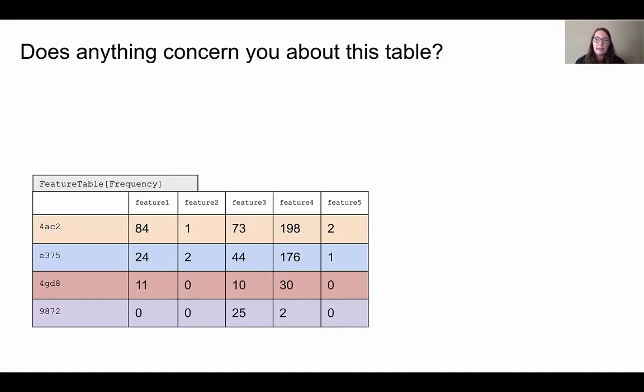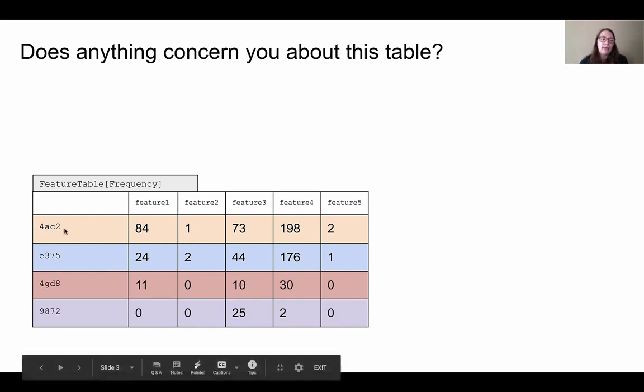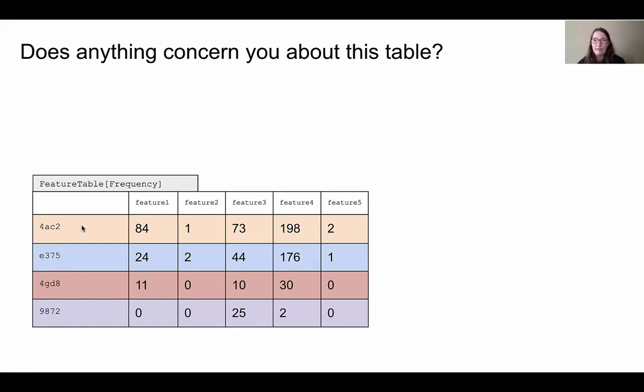This is an example of a feature table where we have each sample on the left column, each feature, and then how many times that feature is present in each sample. We call this a feature table.